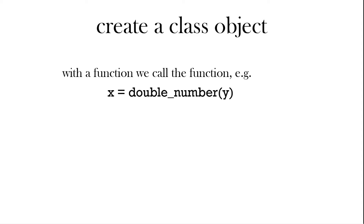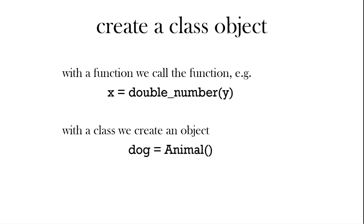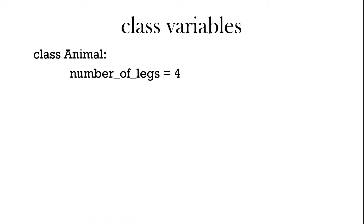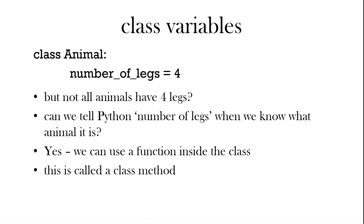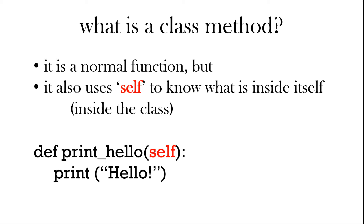With a function we call a function. Here's an example of a function called double_number — we pass it y and it returns a value that goes into x. With a class, we create an object. So in the animal class we could create the object 'dog'. One difference is it uses the word 'self' to know what's inside the class. Inside the class, the word 'self' helps the class understand what's inside it.